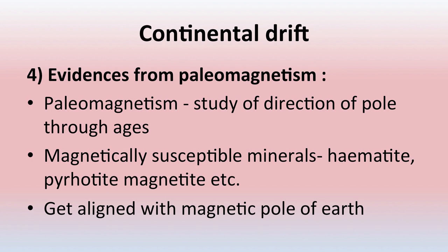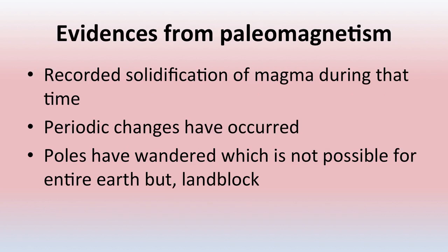The fourth evidence is from paleomagnetism — the study of the direction of pole movement through ages. Magnetically susceptible minerals like hematite, pyrotite, and magnetite get aligned with the magnetic pole of the earth, and the recorded solidification of magma during that time can be seen. Periodic changes occurred during this solidification, and poles have wandered — which is not possible for the entire earth but is possible for land blocks — showing that some land blocks have shifted from their original places.